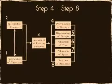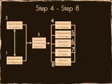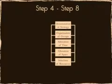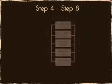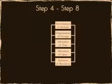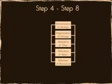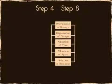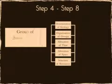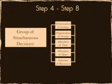Steps 4 through 8 are highly interdependent on each other. Any decision that is made in one of these steps will influence the range of decisions available to the others. Therefore, this special group of steps is known as the group of simultaneous decisions.